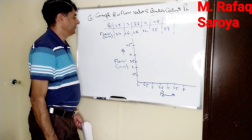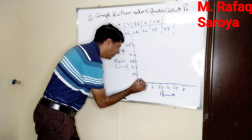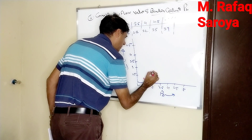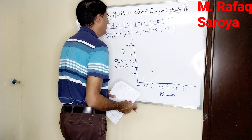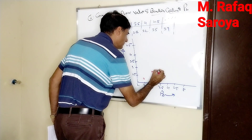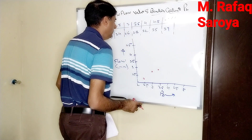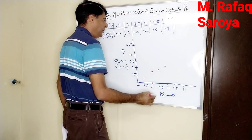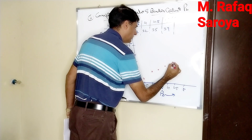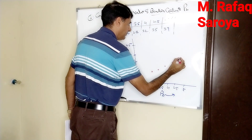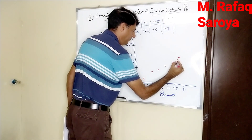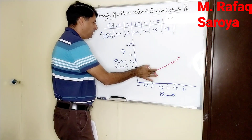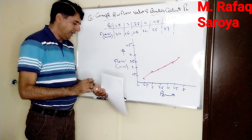Now we will start plotting. With Pb = 2.5, the flow is 2.4 — it would be plotted here. With 3, it is 2.6 — somewhere over here. With 3.5 it is 2.8, with 4 it is 3.2, with 4.5 it is 3.5, and with 5 it is 3.9. When these points are joined, we get a curve — this is known as the flow versus binder curve.